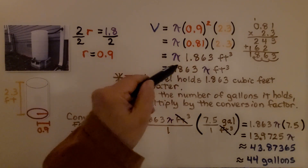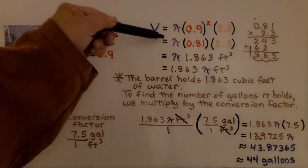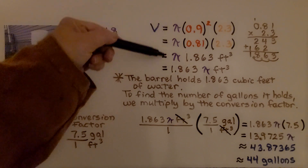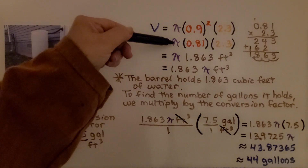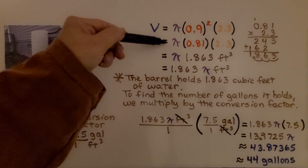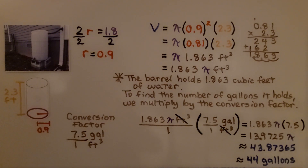We can write pi after it: 1.863π cubic feet. Notice there's an equal sign here — I didn't use the approximation symbol because pi represents all the digits of pi, so we can use an equal sign when we use the actual pi symbol. When we use 3.14, we need the approximation symbol. So the barrel holds 1.863π cubic feet of water.